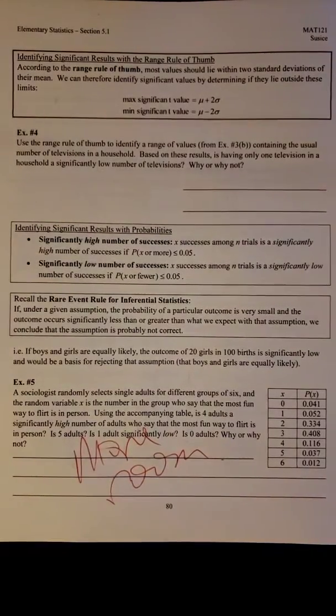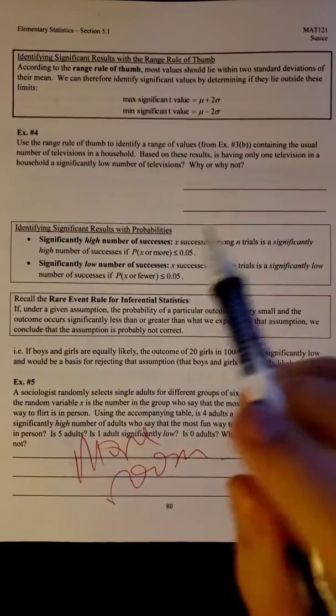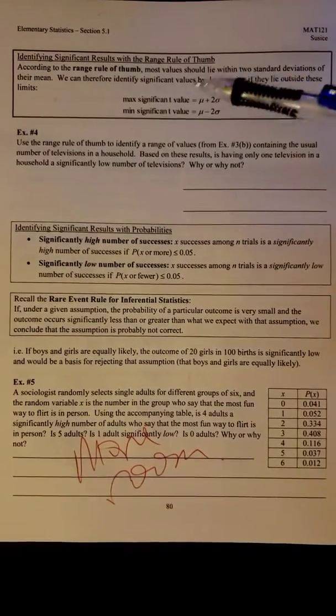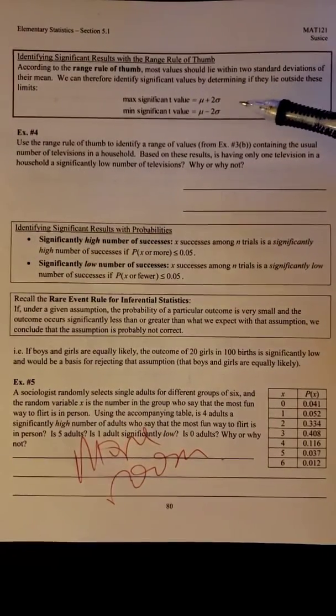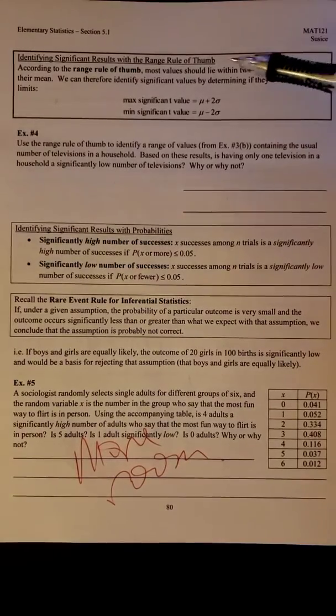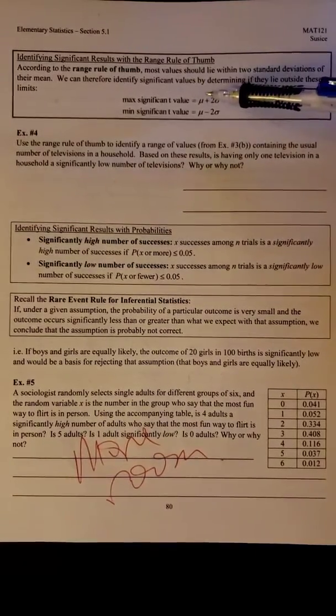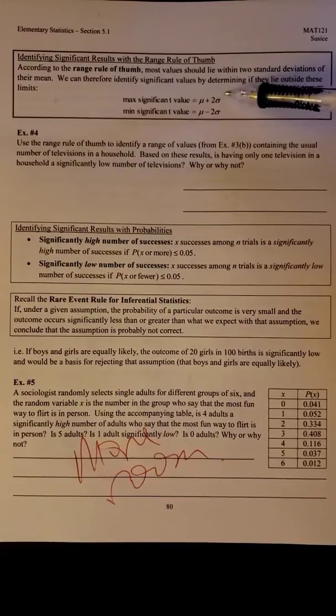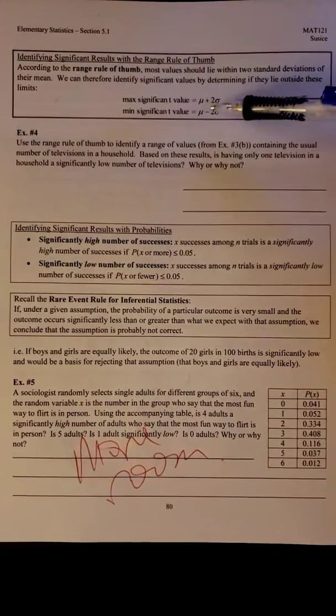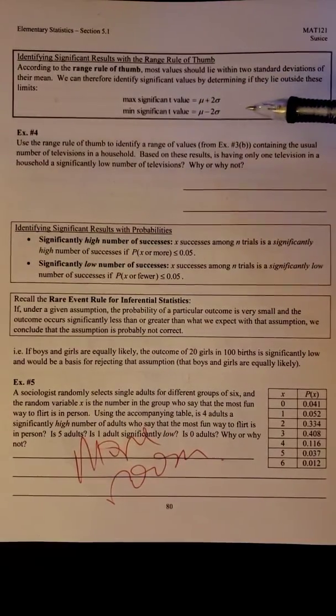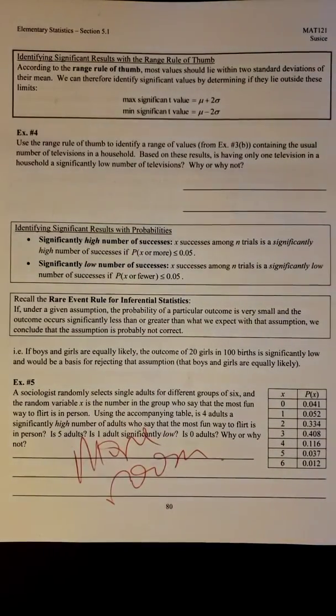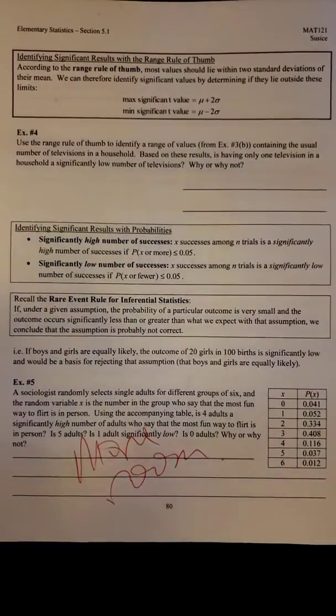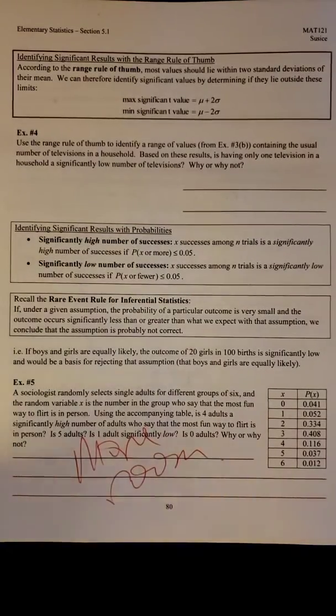So the next part of 5.1 is looking at the range rule of thumb and significant values. This still ties in from what we learned back in Chapter 3. The max significant value is the mean plus two standard deviations, and the min significant value is the mean minus two standard deviations. Anything outside of those cutoffs are significant. Anything in between are not significant.